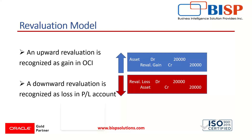We can better understand revaluation with the help of this picture. We can see the arrow that is going upward, which represents an increase of the asset — it is a gain for the organization, which will be recorded under the OCI, that is the Other Comprehensive Income. If we look at the downward arrow, it represents a loss for the asset, and this loss will be recorded under the income statement or the profit and loss account.